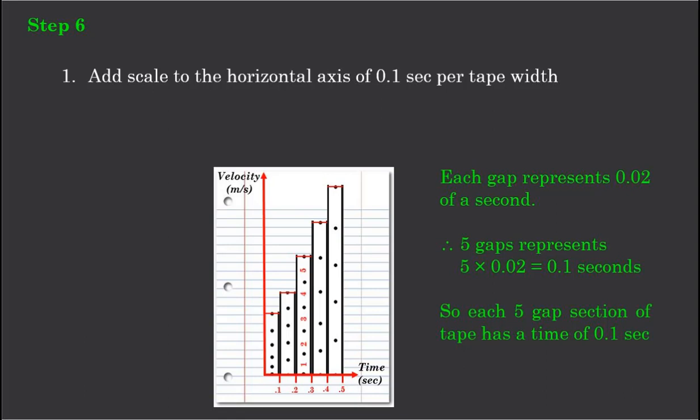Simply, at the end of the first section of paper, we have 0.1 on our scale. We mark 0.1. At the end of the second strip of paper, we mark 0.2. The third, 0.3, and so forth.